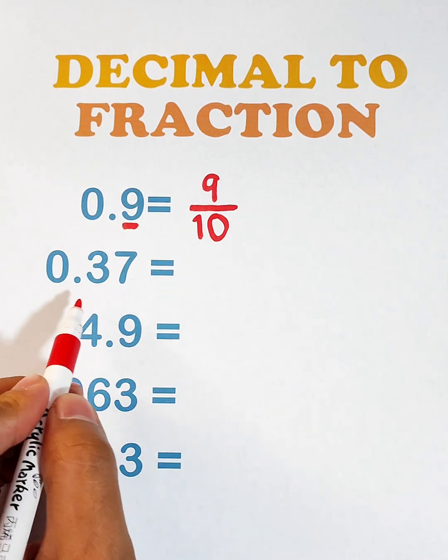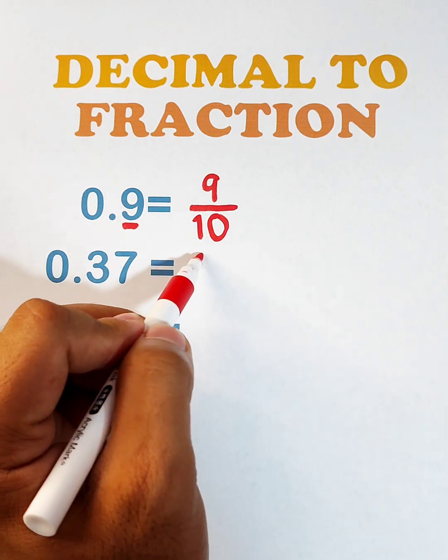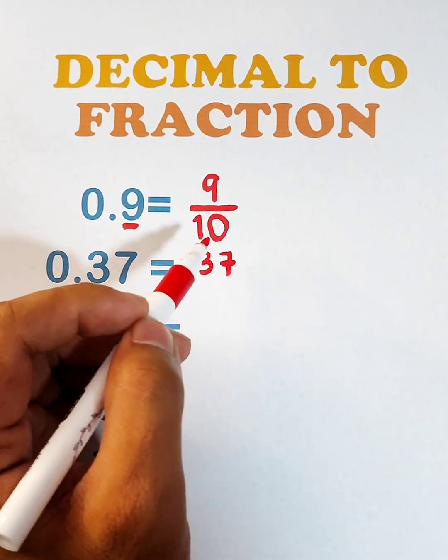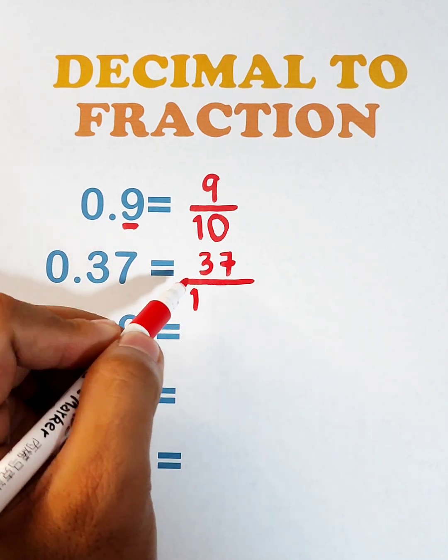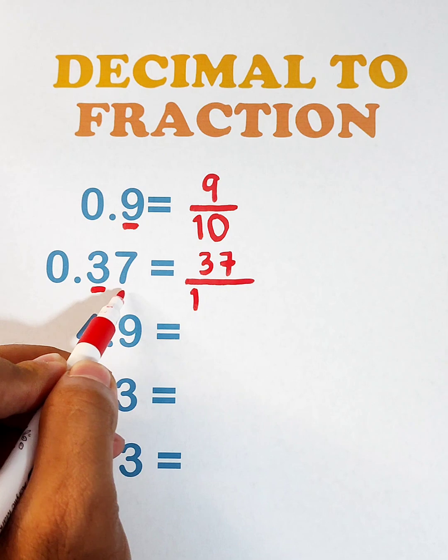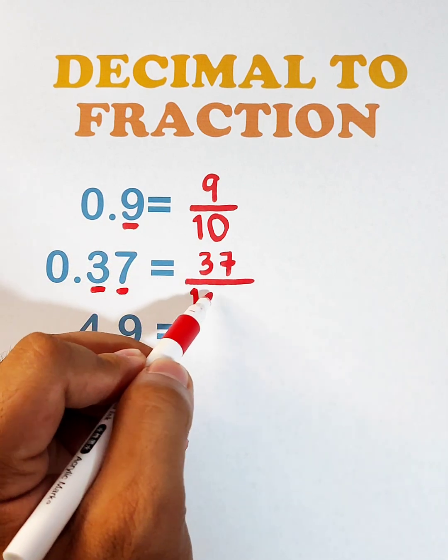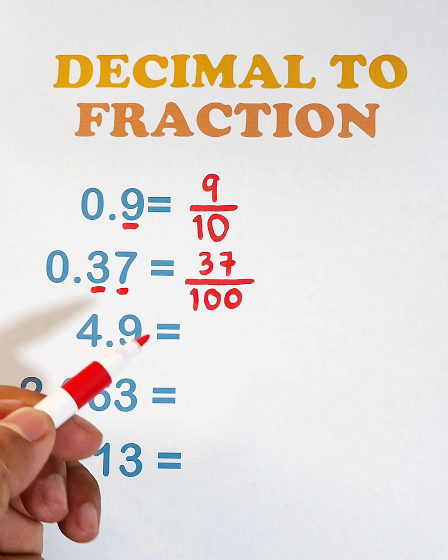Now let's move on with 0.37. Get this number, 37, in your numerator. Then for your denominator, put 1 here. Next step is to count the number of decimal places, 1 and 2, that is equivalent to 2 zeros. And the answer is 37 over 100.